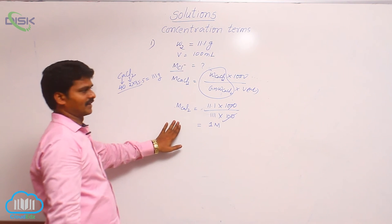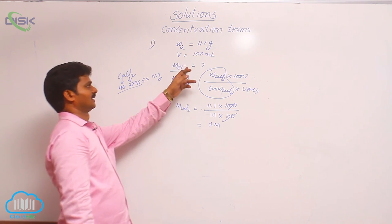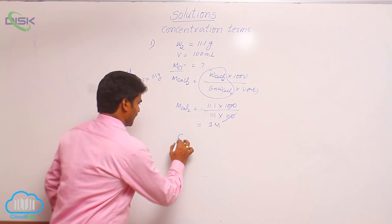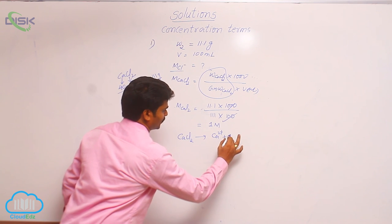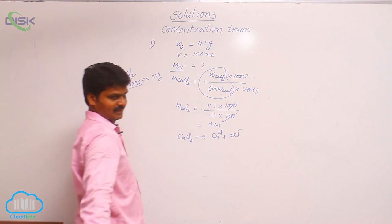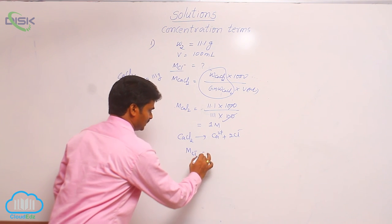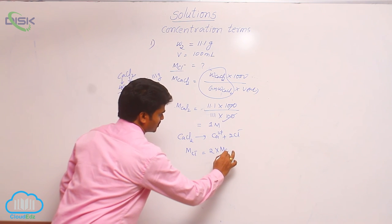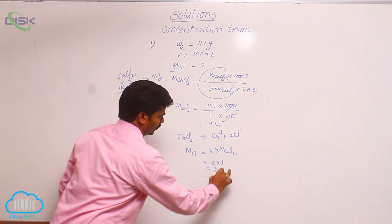So molarity of calcium chloride is 1 molar. But we asked for molarity of chloride ion. See, calcium chloride 1 mole gives 1 mole calcium ion plus 2 moles chloride ion. That is why molarity of chloride ion equals 2 into molarity of calcium chloride. That means 2 into 1, that is equal to 2 molar.